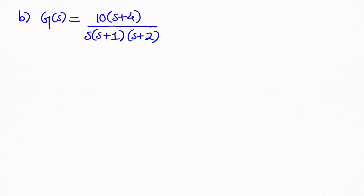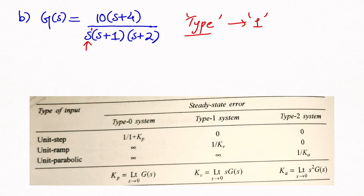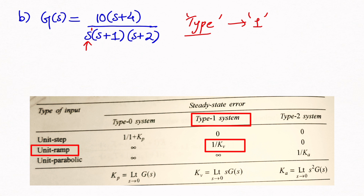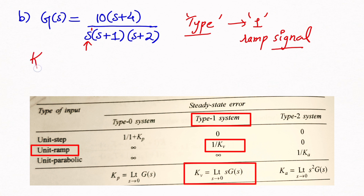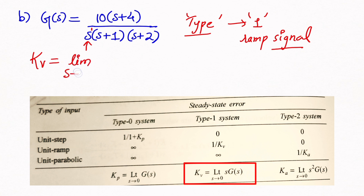For the second question, another open loop transfer function G(s) is given. First, we find the type: there is one 's' sitting alone, so this is a Type 1 system. In a Type 1 system, only a ramp signal gives a constant steady state error. For the ramp signal, we calculate the Kv value: Kv = limit as s→0 of s·G(s)·H(s).